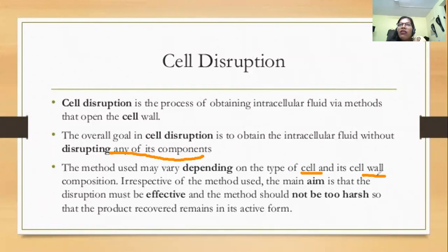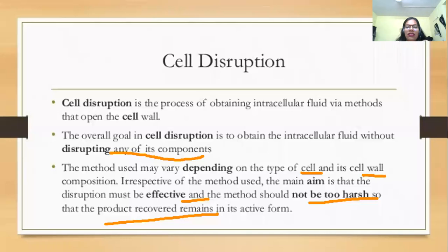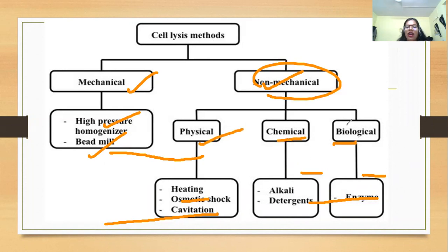If you want to isolate a protein from bacteria or plant, you cannot use the same method as for animal cells, because bacteria and plants have cell walls, so none of your protein will come out. The main aim is that disruption must be effective and the method should not be too harsh, so that the product recovered remains in its active form. There are two types of cell lysis methods: mechanical and non-mechanical. Mechanical includes high pressure homogenizer and bead mill. Non-mechanical includes physical (heating, osmotic shock, cavitation), chemical (detergents, alkyl methods), and biological (enzymes).